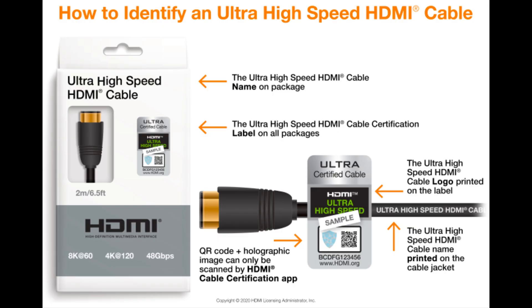The new HDMI 2.1a specification comes with a new cable specification that has increased bandwidth capability of up to 48 gigabits per second, up from 18 gigabits per second with HDMI 2.0.